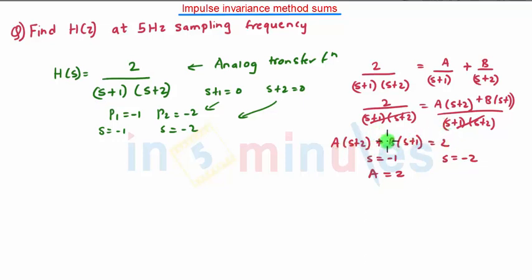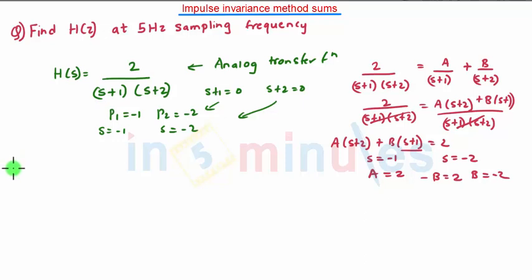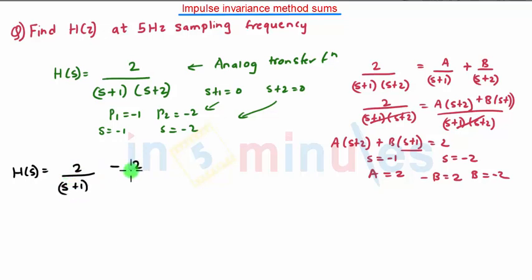When s equals minus 2, the A term becomes zero since A(minus 2 + 2) = 0. We are left with B(minus 2 + 1), so minus B equals 2, giving B equals minus 2. Finally, after partial fraction expansion, H(s) equals 2/(s+1) minus 2/(s+2).